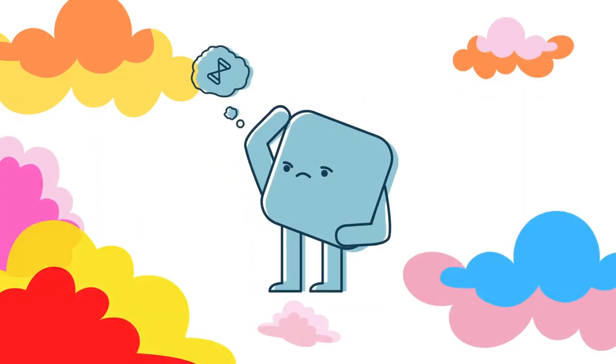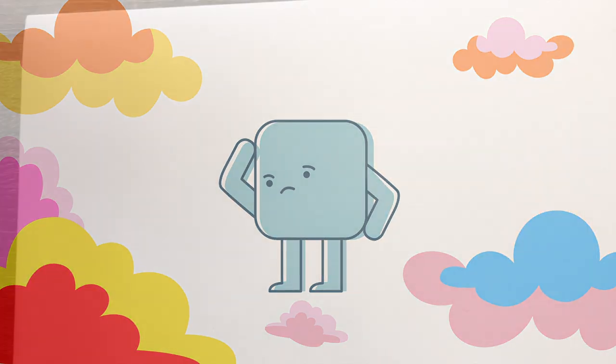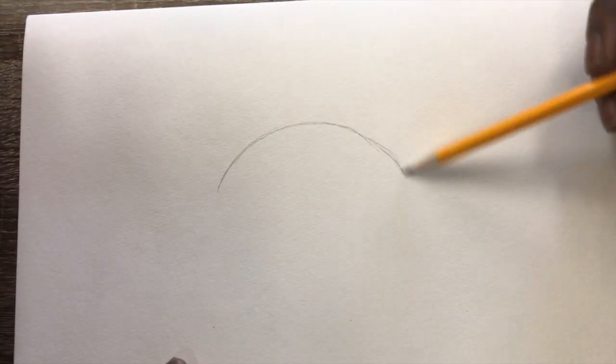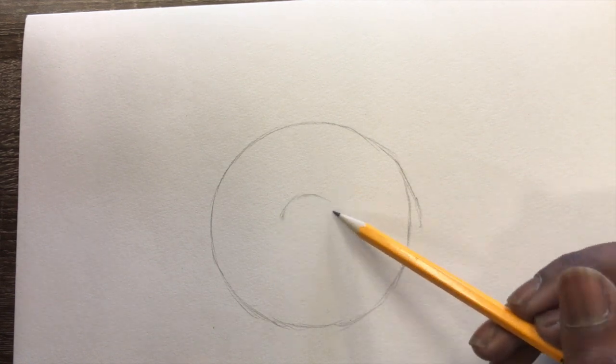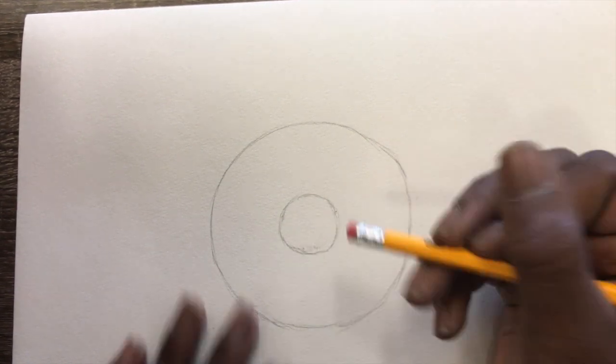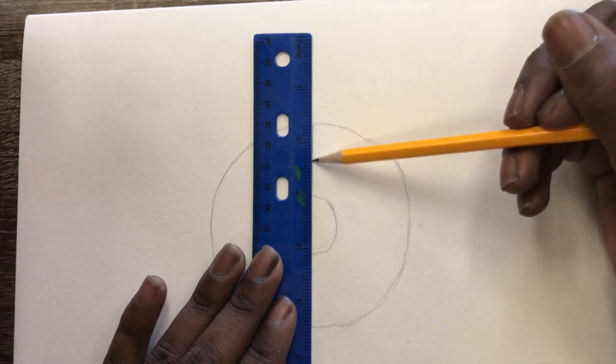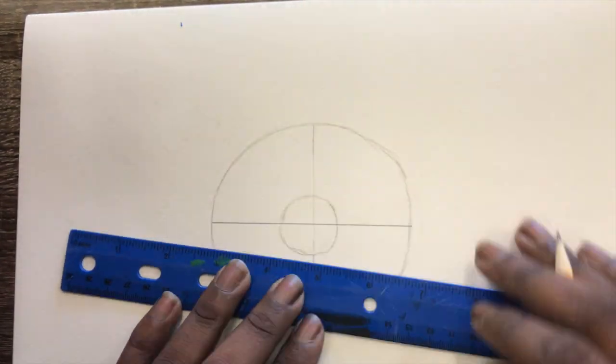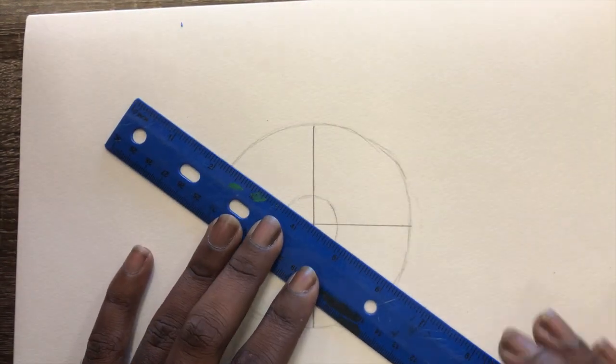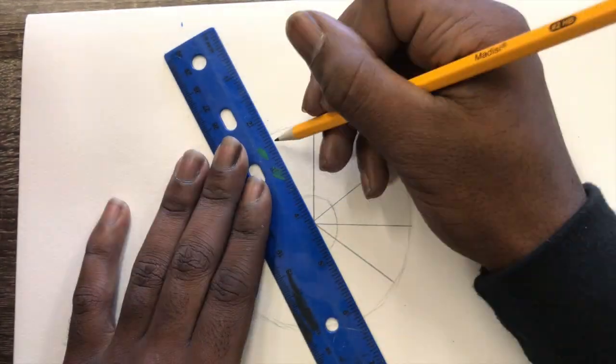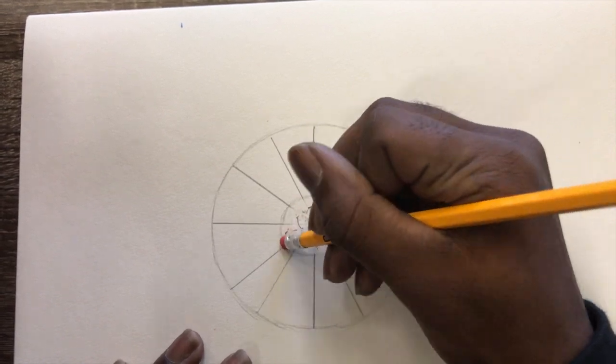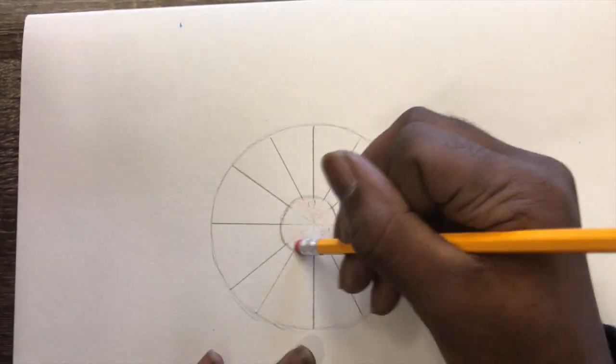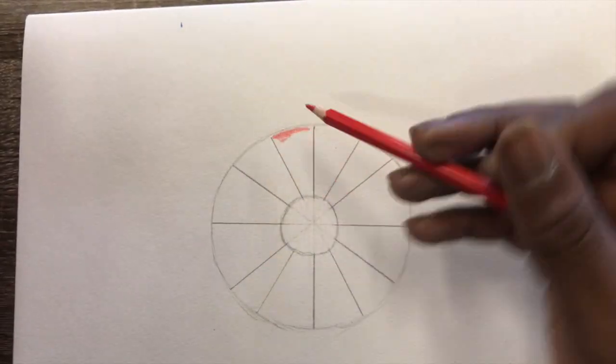You may be wondering how to create a color wheel. Grab your pencil and paper, and let's get started. First, draw a sizable circle centered on the page. Using a ruler, section your circle into 12 parts. Now you can design the color wheel.